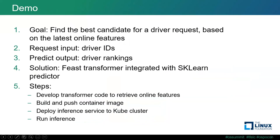Next up is a short demo. The use case is to find the best candidate for a driver request — out of, for instance, five drivers identified within a certain distance from the requester. The input is the unique driver IDs, and the output will be the predicted rankings for the final recommendation. Let me switch out of the presentation to do a quick code review and short demo.